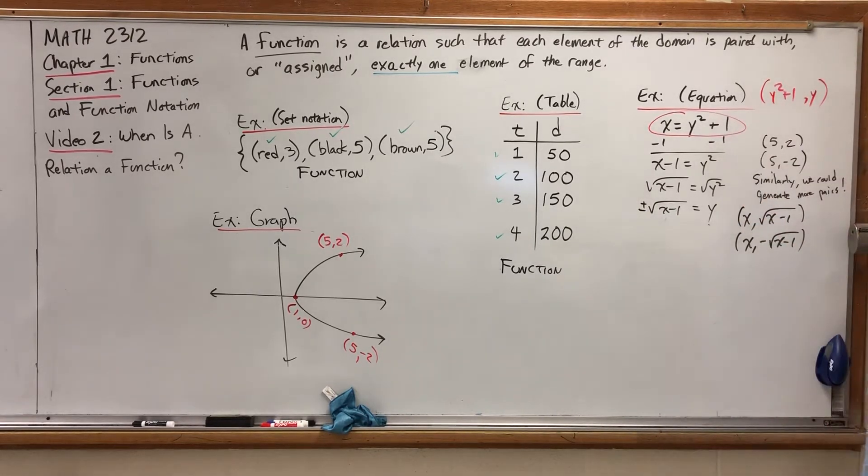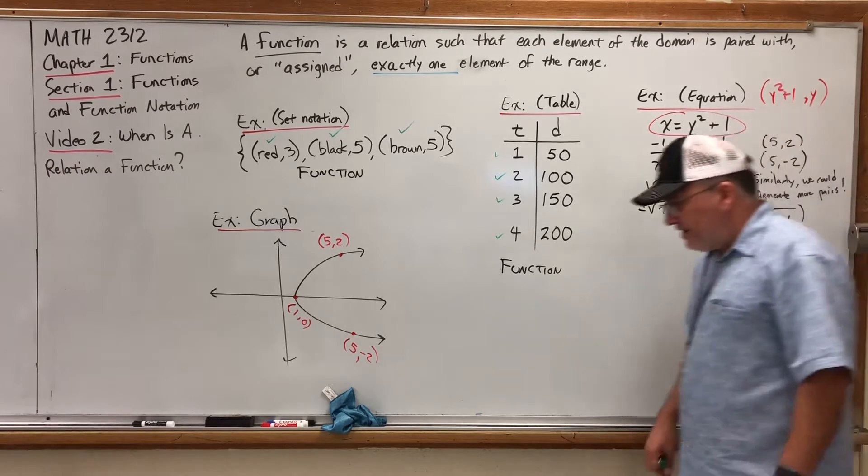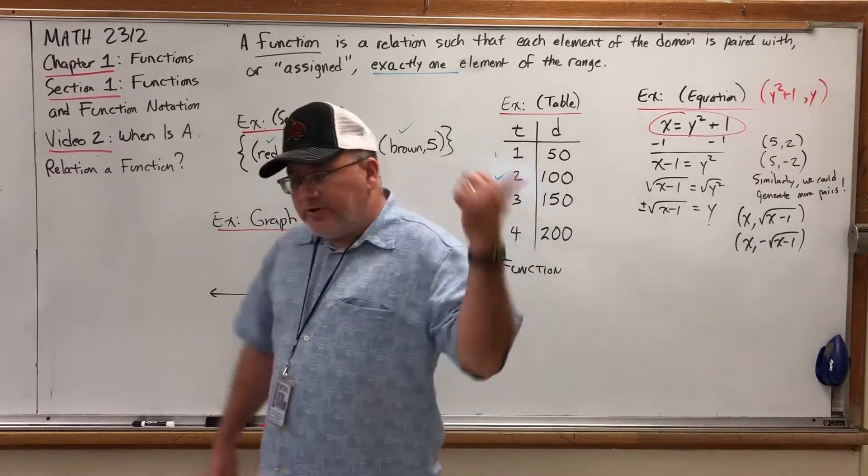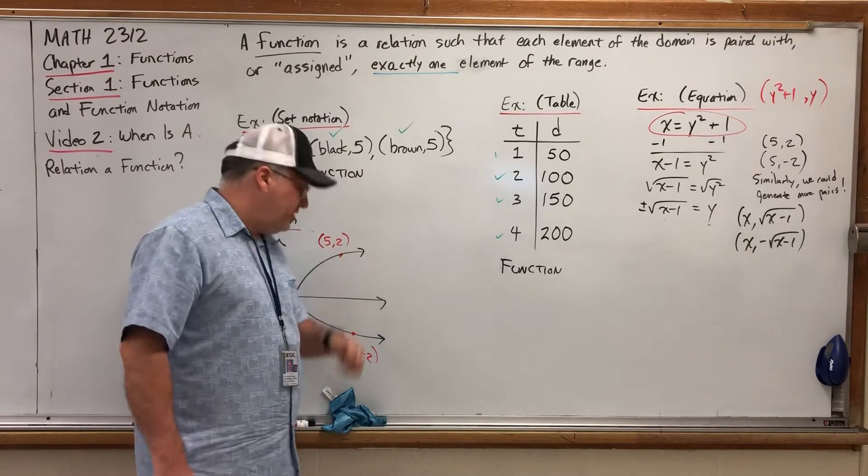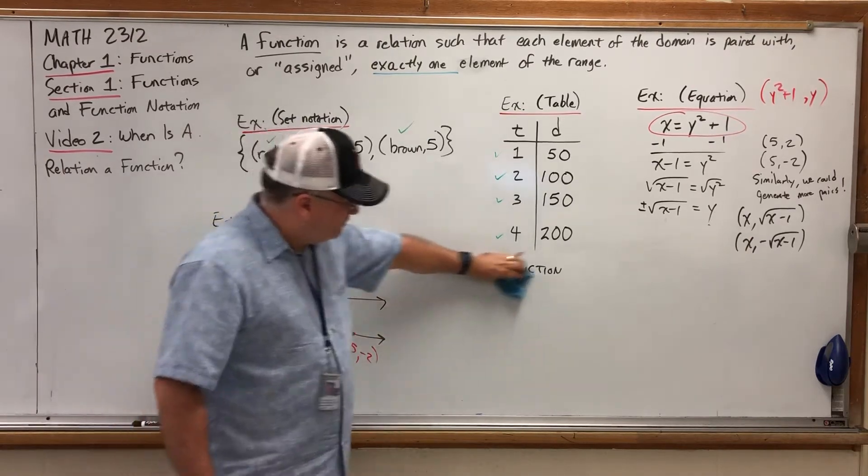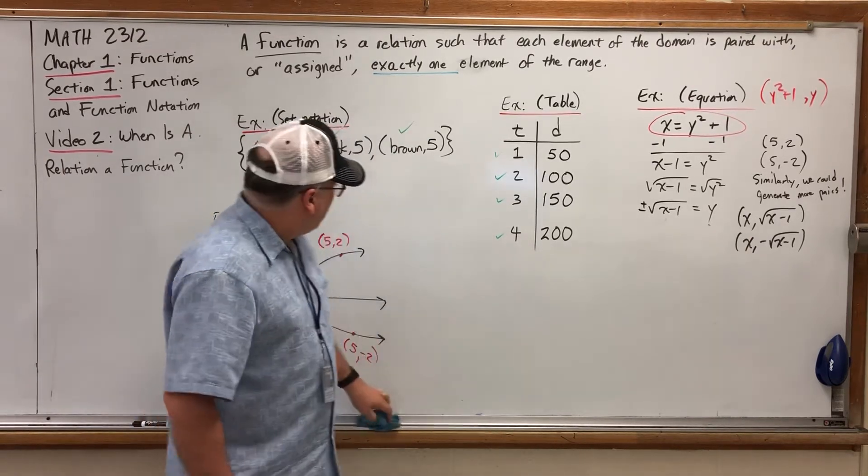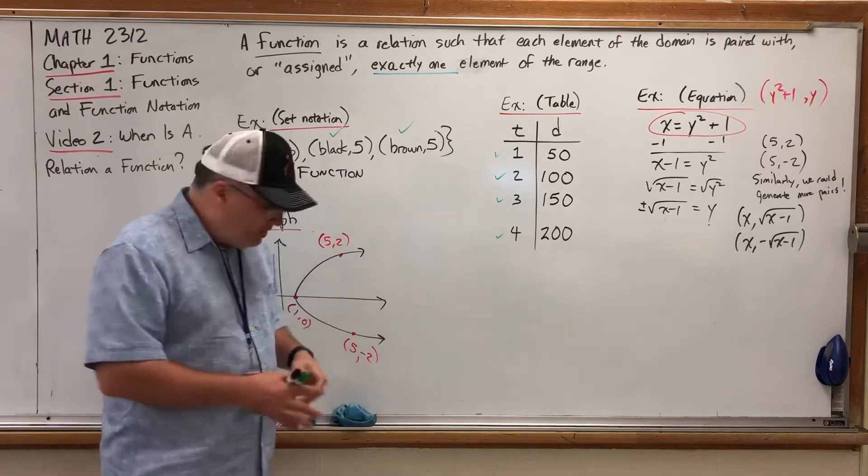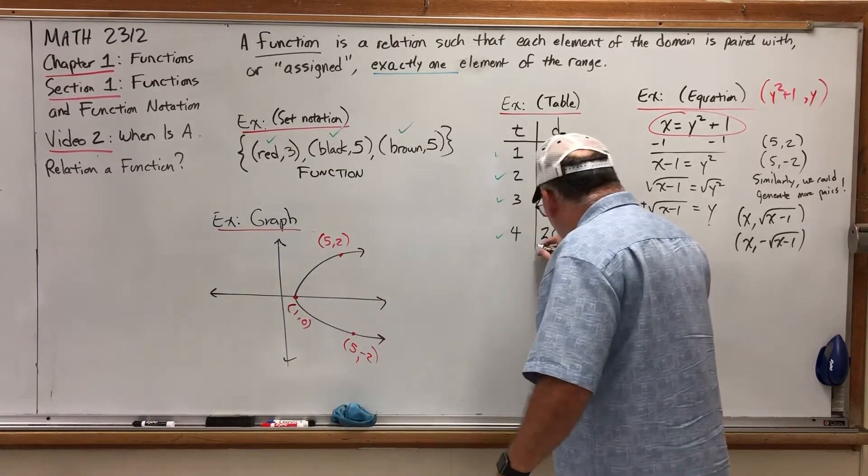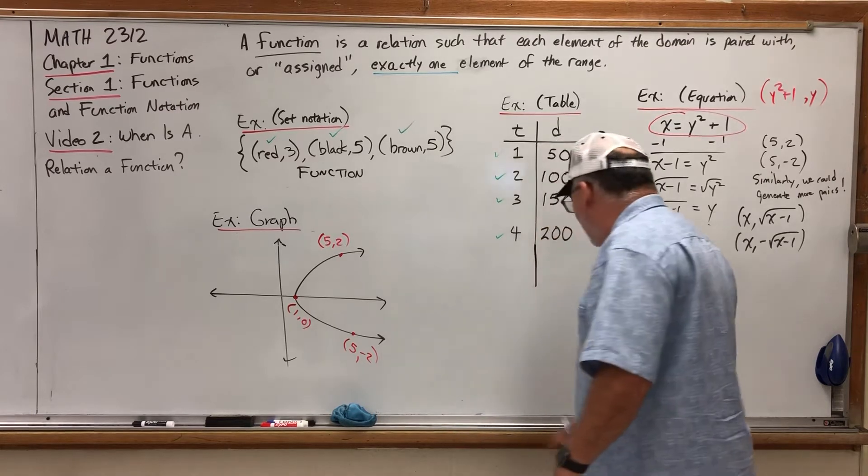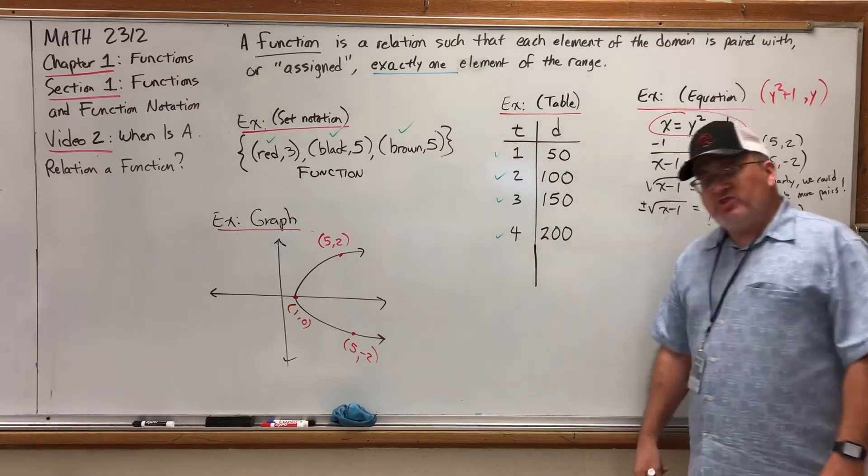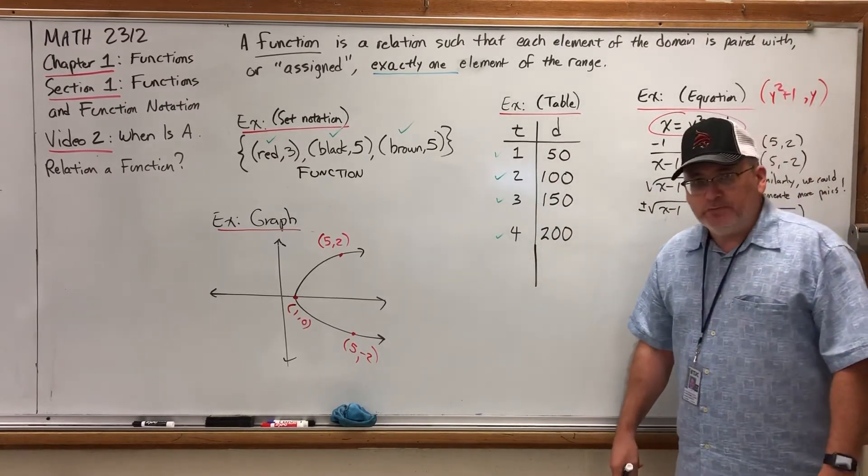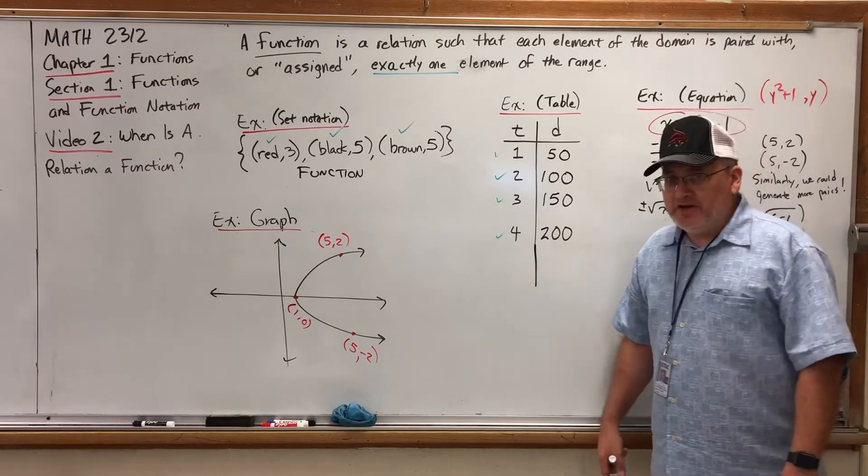But what about this guy? This equation? Actually, before we go to that, let's go back to the table. I thought about doing this on the set notation, but I'm going to do it here. It is a function. But so far, we haven't seen something that isn't. So my question to you is, can you think of what would have to happen if I put another row and changed the answer to no, it's not a function? How can we break it from being a function?